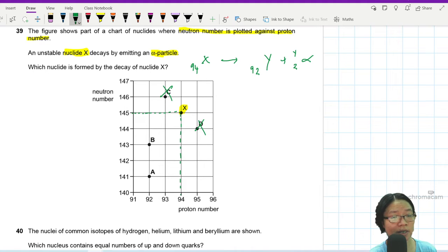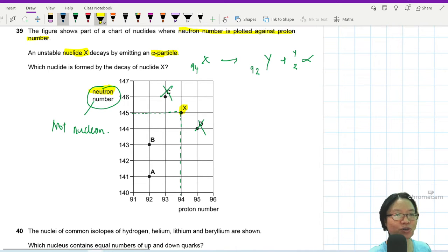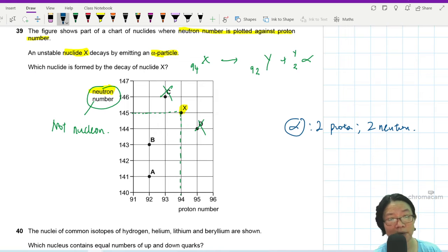So then a trap here is that this is not nucleon number. It is neutron. Neutron number. So if this is the case, right, you need to think about the alpha particle as 2 proton 2 neutron. Meaning your neutron also must drop by 2.